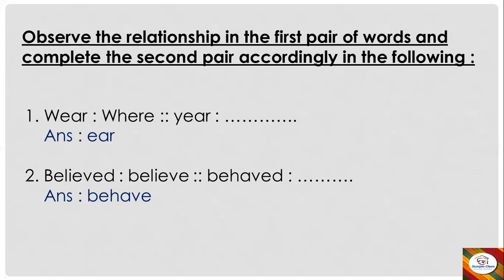First question: 'where' is to 'wear' as 'ear' is to dash. The first pair is a homophone. W-E-A-R, 'wear' — wearing a cloth. And 'where' — when you ask a question 'where are you going?' Both are pronounced the same but the meaning and the spellings are different. Such words are known as homophones. So the first pair is related as homophones.